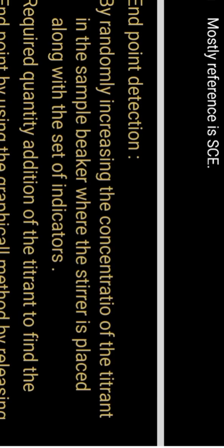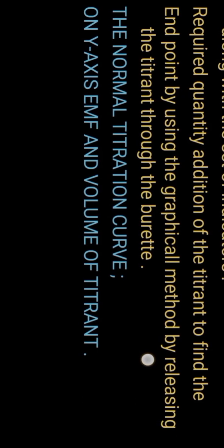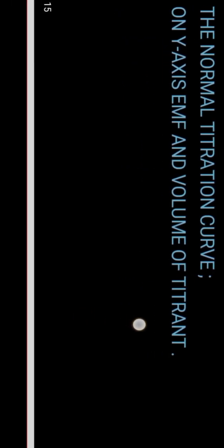The most commonly used reference electrode is the Saturated Calomel Electrode (SCE). For end point detection, we randomly increase the concentration of titrant in the sample beaker where the stirrer is placed along with the indicator electrode. We add the required quantity of titrant to find the end point using the graphical method, by releasing the titrant through the burette.